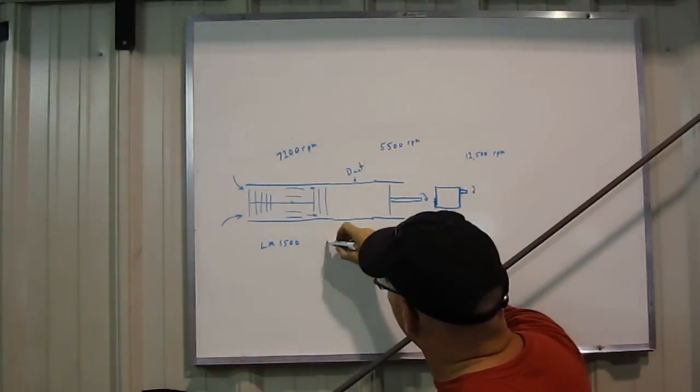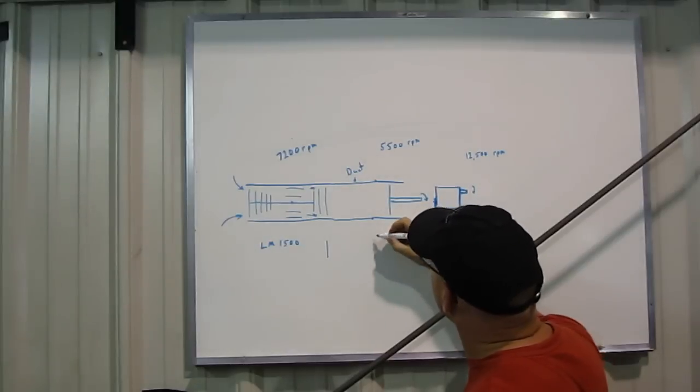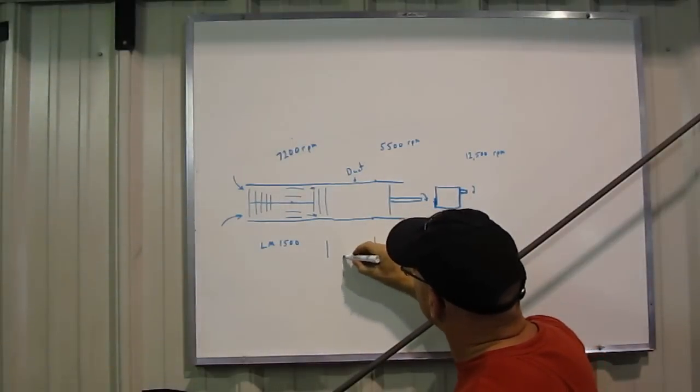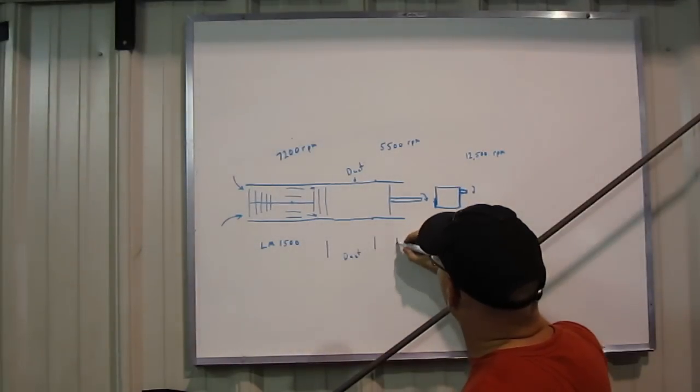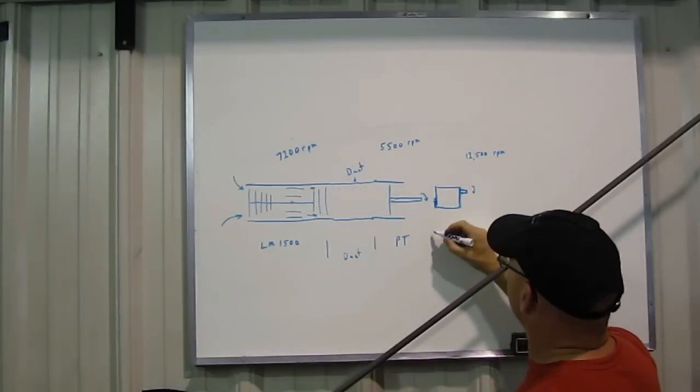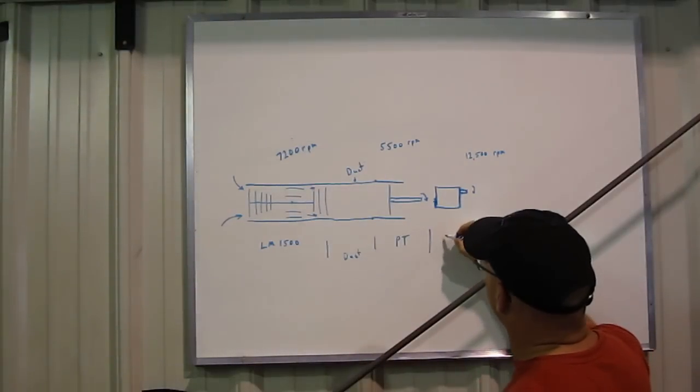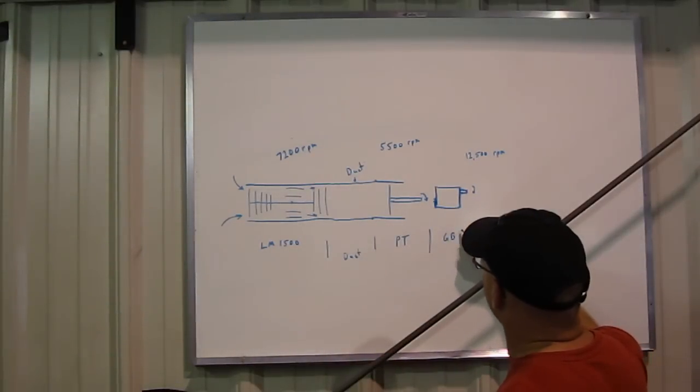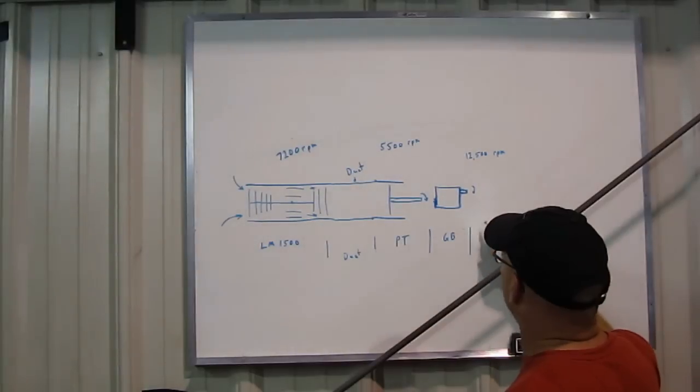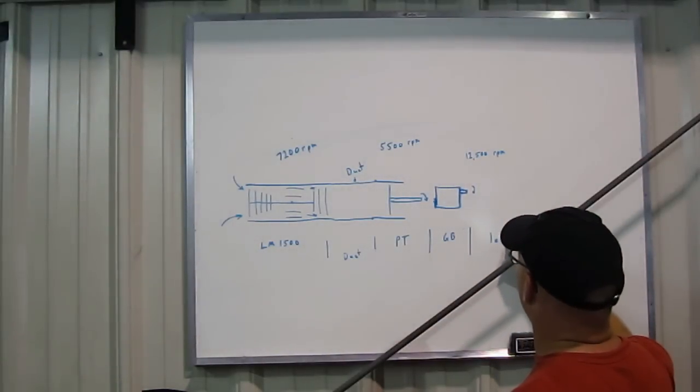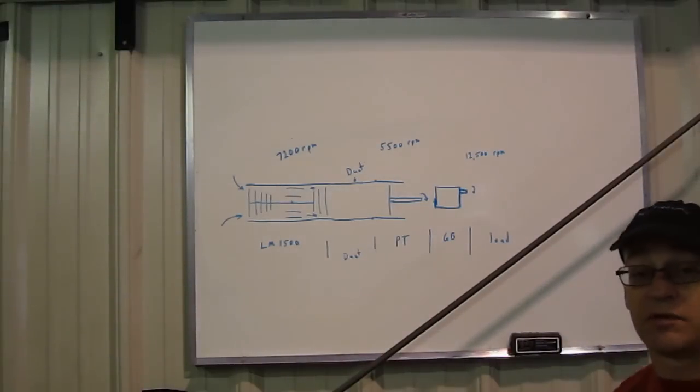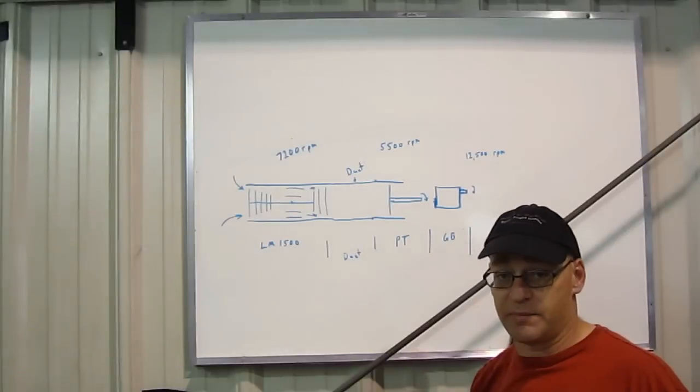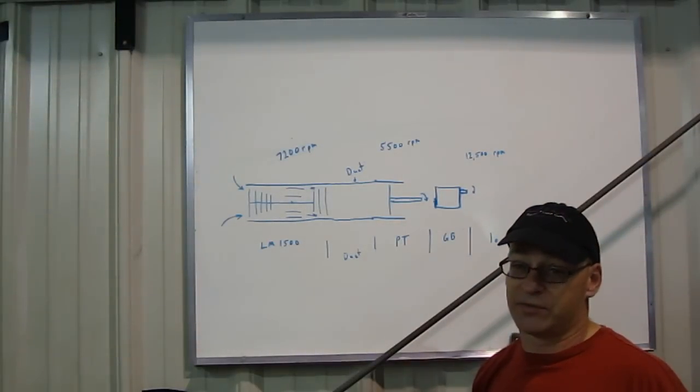This would be the LM1500, this would be the duct, and this would be the power turbine, or PT for short. This here would be the gearbox if it's used, and then over here would be the load. In this particular situation, the load is a centrifugal compressor of natural gas in a pipeline, but it could also be an electrical generator.